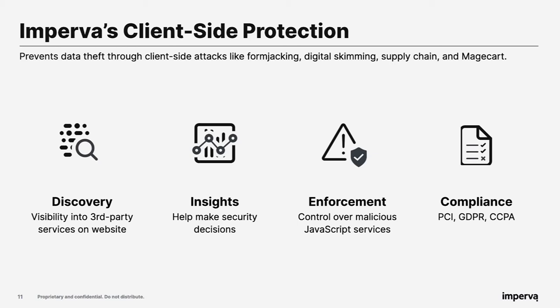In terms of the product, there are four core capabilities. First, discover: we give visibility into all third-party JavaScript services on the website. Second, insights: we provide reputation information to help make security decisions about whether to allow a service. Third, enforce: you can block specific services. Fourth, compliance: this helps address PCI, GDPR, CCPA, and other requirements around data loss.